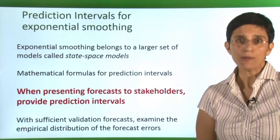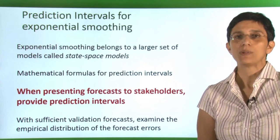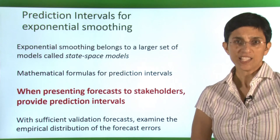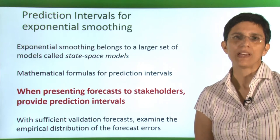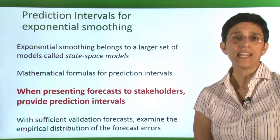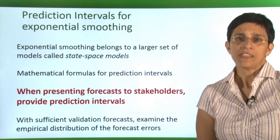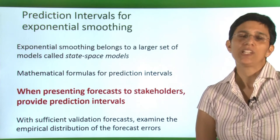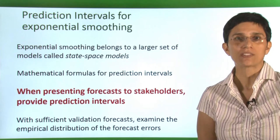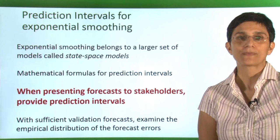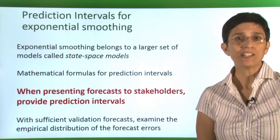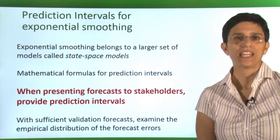We talked about prediction intervals early on when we talked about performance metrics. Exponential smoothing methods belong to a larger set of models called state-space models. This is good news because it means that we have closed mathematical formulas for prediction intervals. We want to use those when we're presenting forecasts to stakeholders.